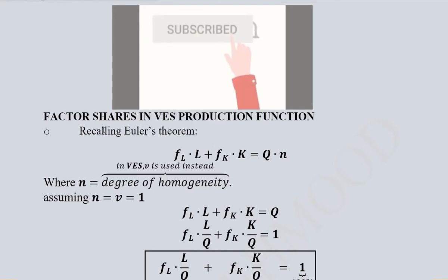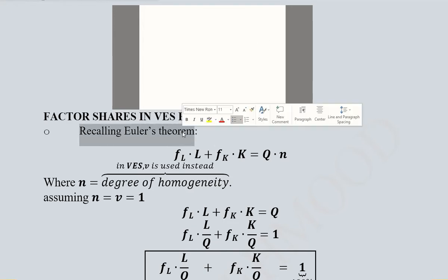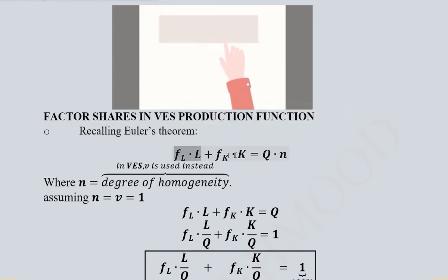Factor shares can be calculated on the basis of Euler's theorem. This theorem states that the derivative of the function with respect to labor multiplied by its actual value, plus the marginal product of capital multiplied by its total value, equals the output times the degree of homogeneity n.